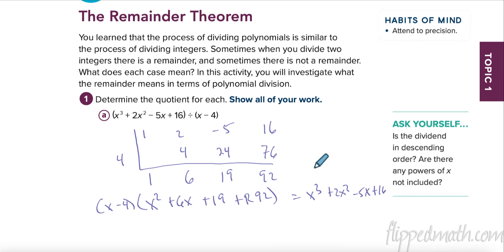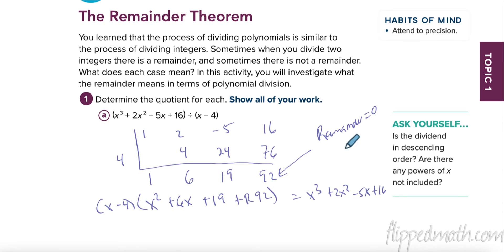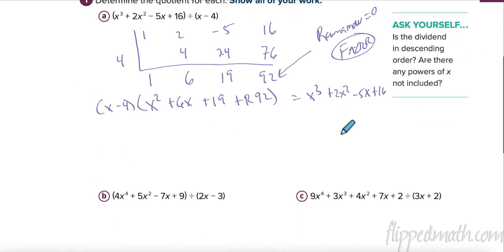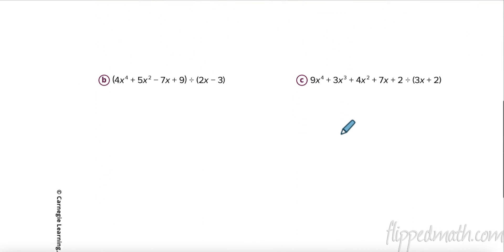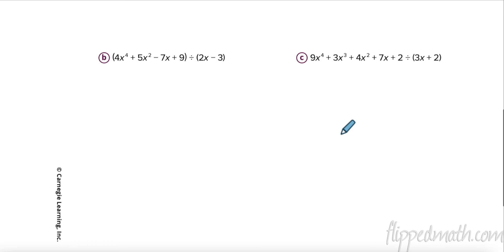When the remainder is zero, that means it's a factor.